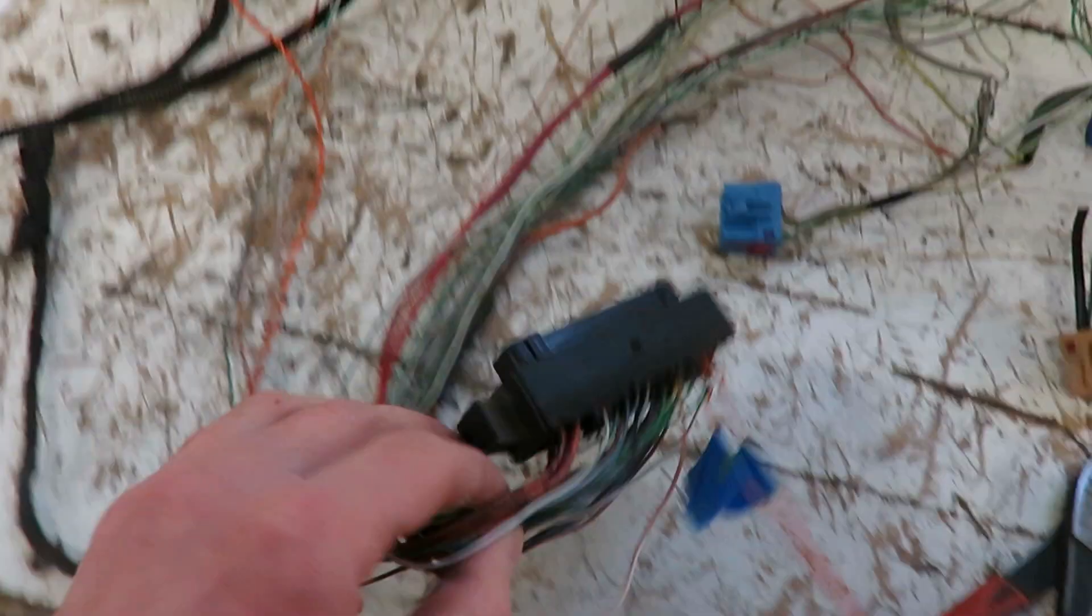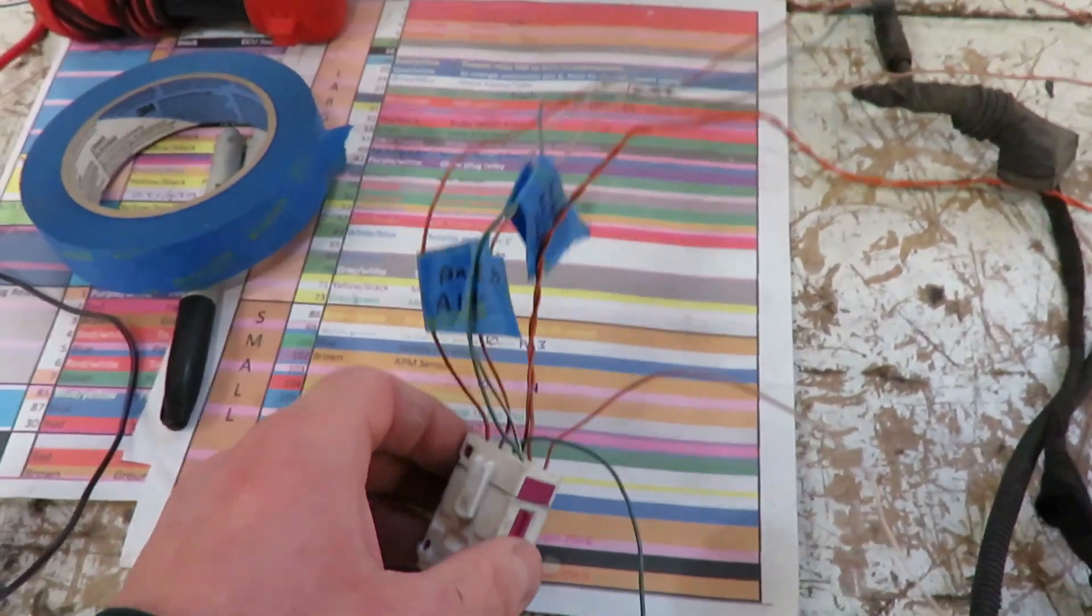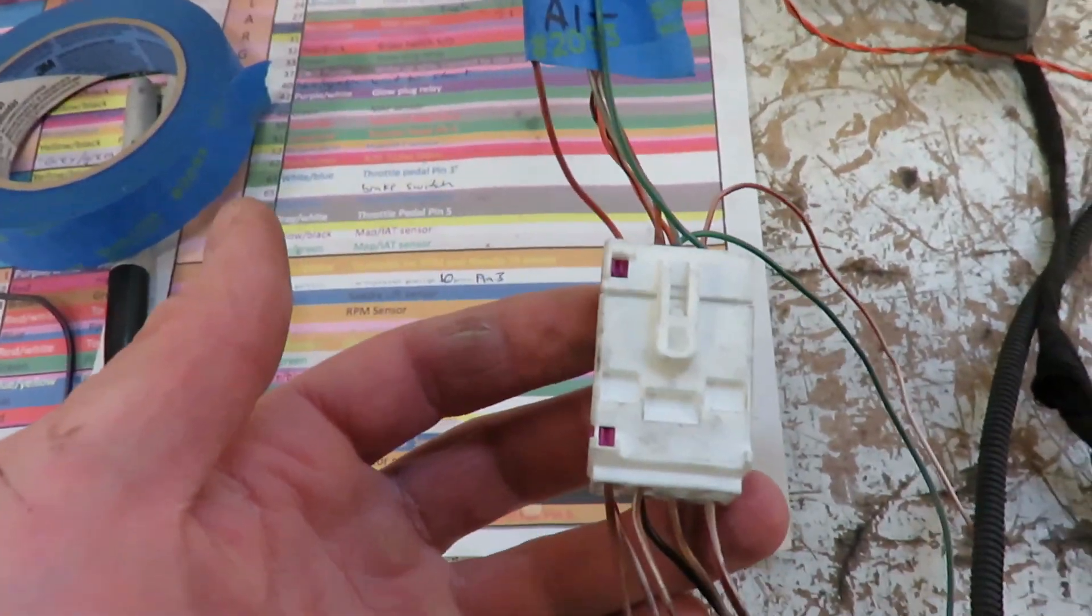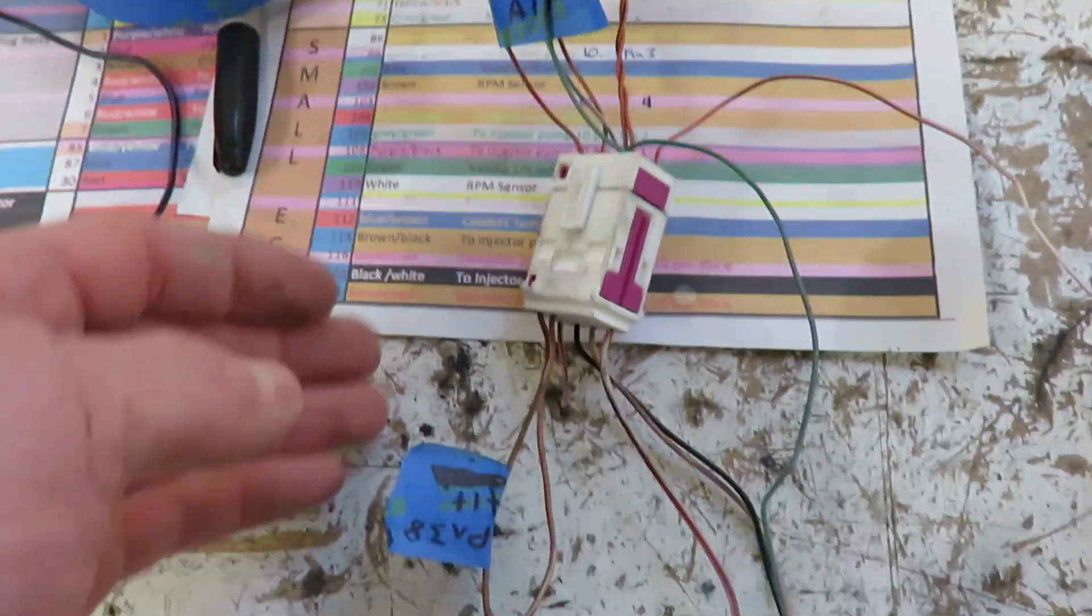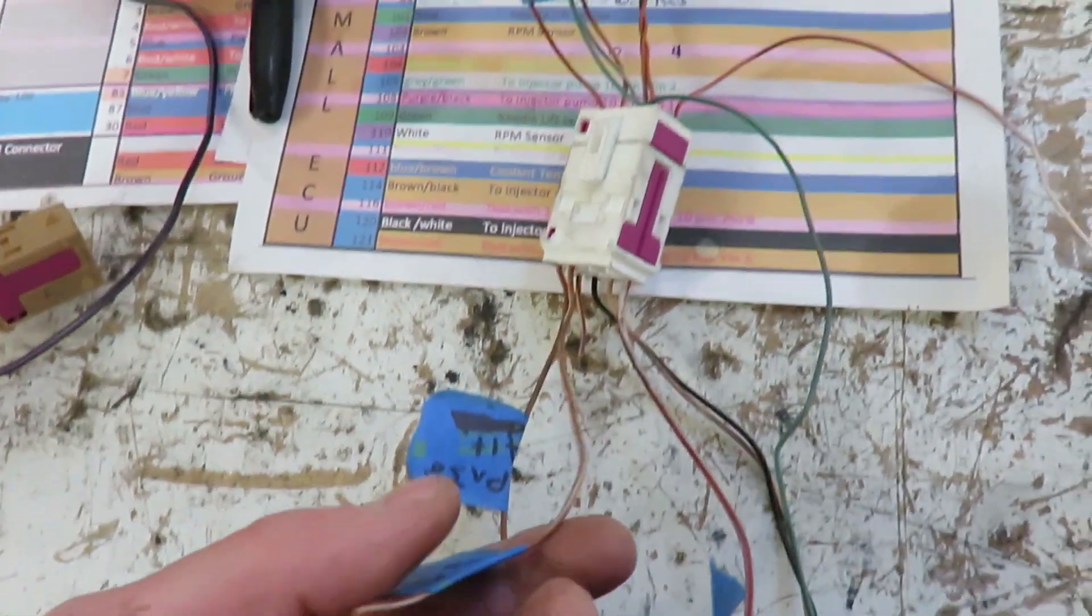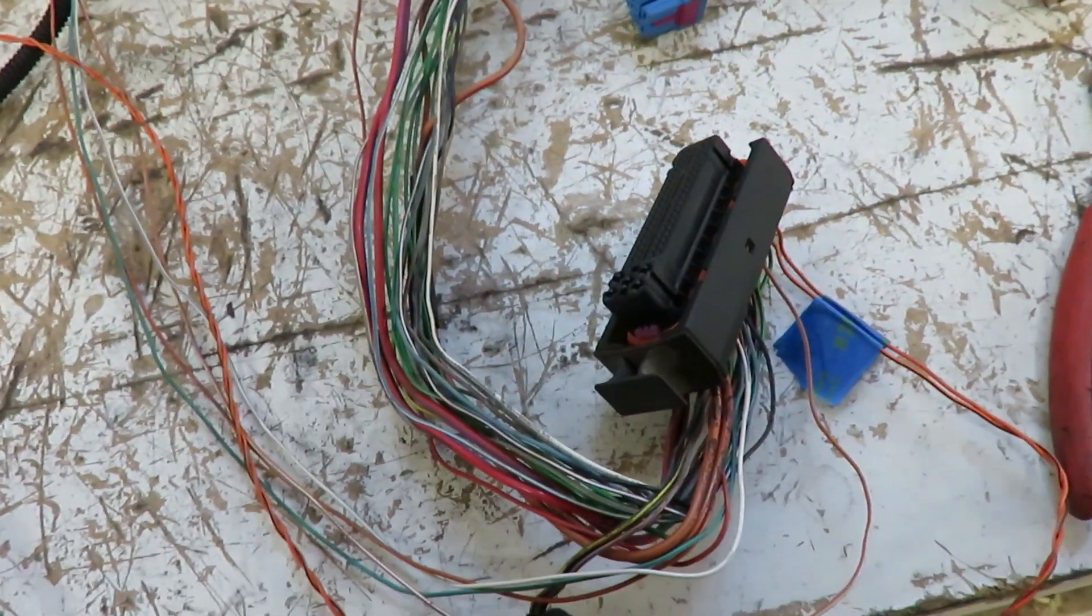Alright, so I'm back on this harness with the big ECU plug. I'm going from these plugs that I've traced all the wires and I know what they do. Some of these wires are pinned into the ECU and we don't need them.